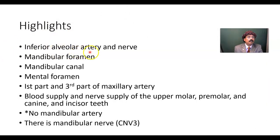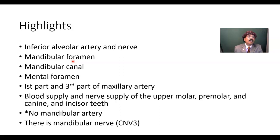In summary: the inferior alveolar artery is a branch of the first part of the maxillary artery. The inferior alveolar nerve is a branch of the mandibular nerve. The mandibular foramen allows passage of the inferior alveolar artery, inferior alveolar vein, and inferior alveolar nerve. The inferior alveolar vein ultimately drains to the pterygoid venous plexus and then to the maxillary vein.